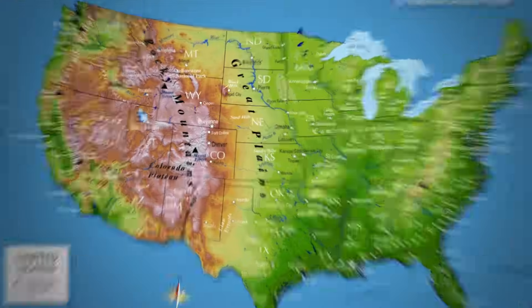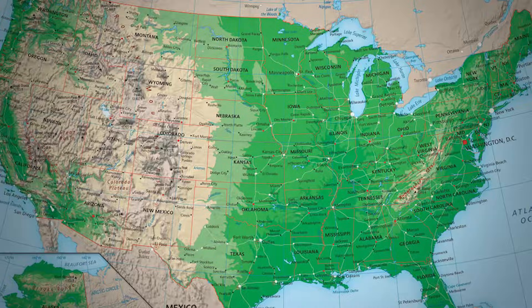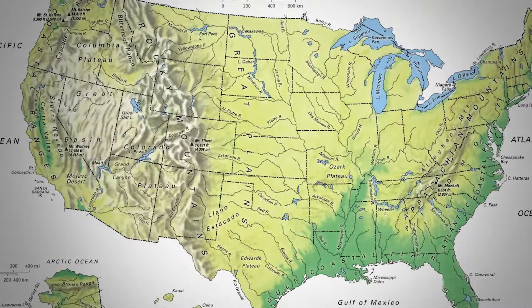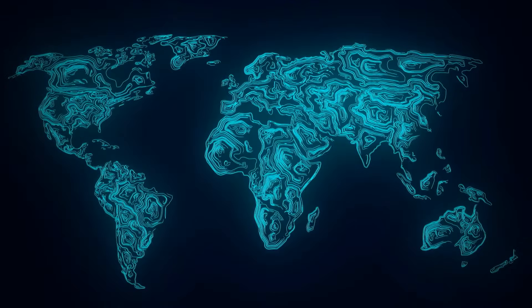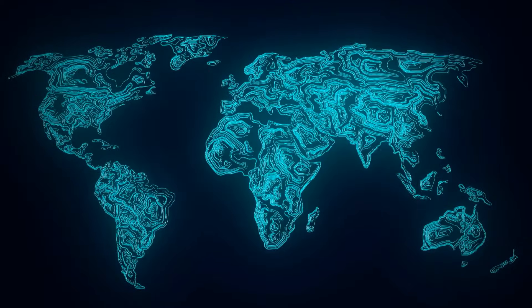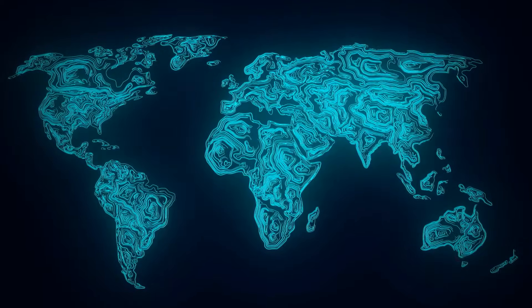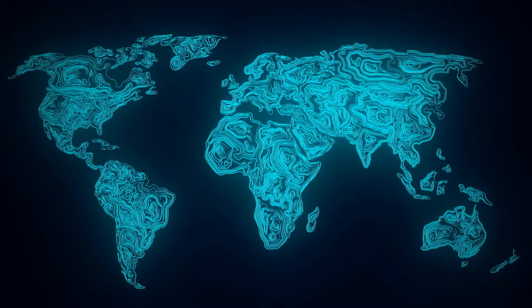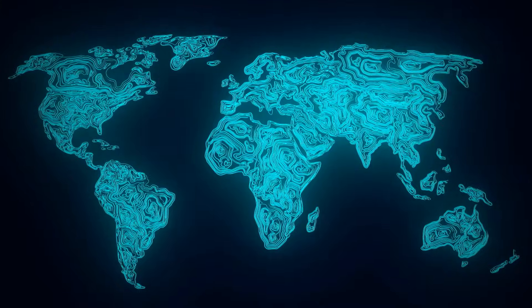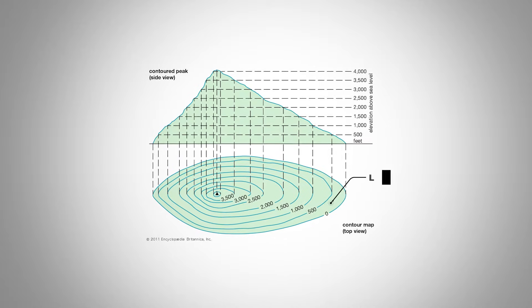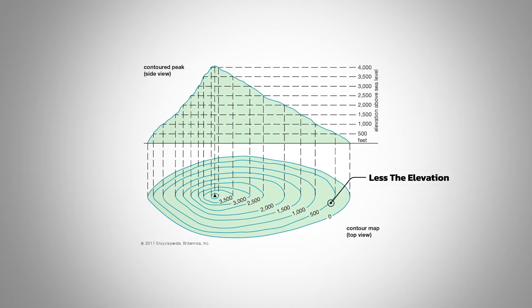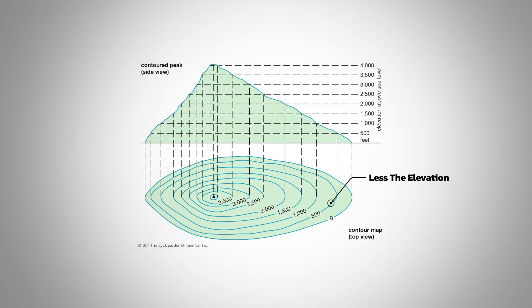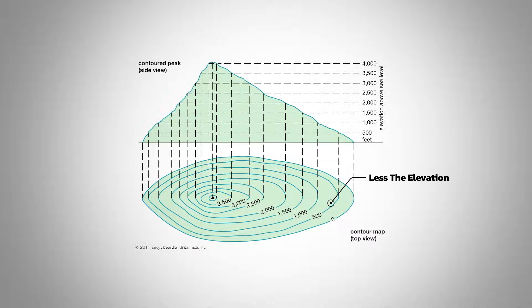These maps connect the different points on a map that have the same elevation. As these lines get closer together, it means that the elevation is significantly changing. But as the lines space out, it shows a more gradual change and slope.